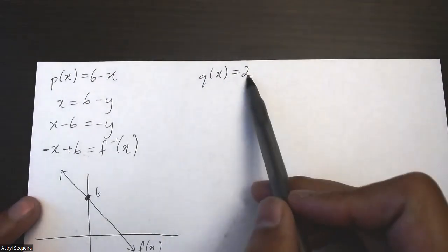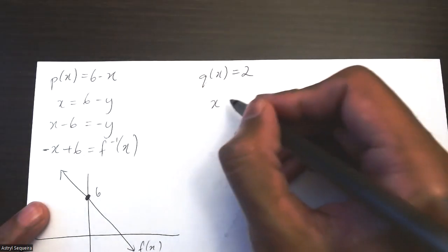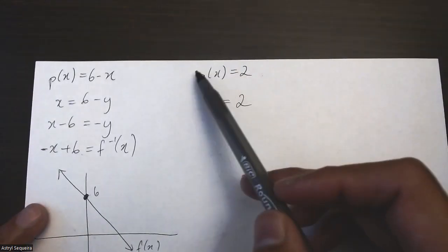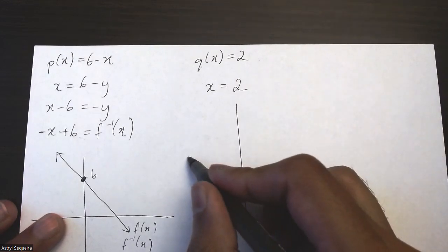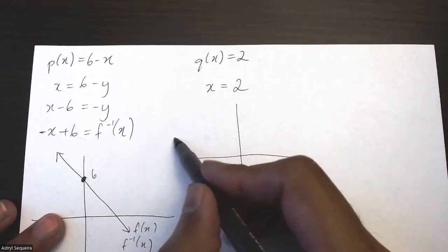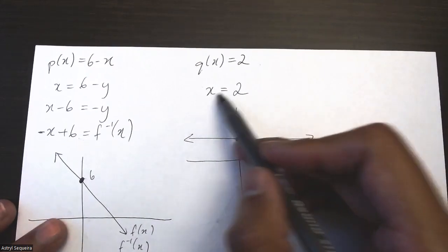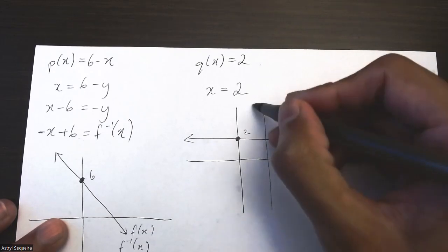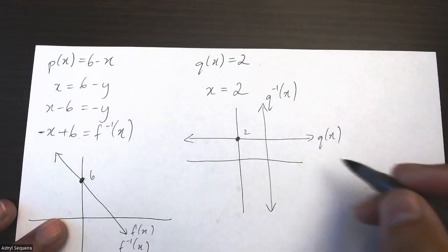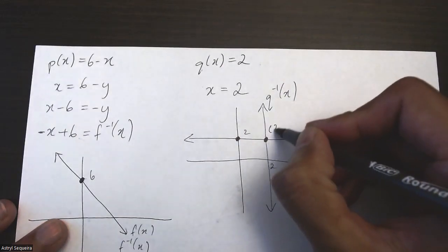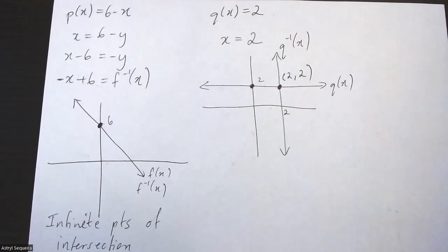The last example is also an exception: q(x) equals 2. There's no x term, so when I flip x and y, the inverse is simply x equals 2. The original is a horizontal line at y equals 2, and the inverse is a vertical line at x equals 2. These two lines intersect at exactly one point: (2, 2). A couple of exceptions at the end, but the overall approach still follows the same steps.